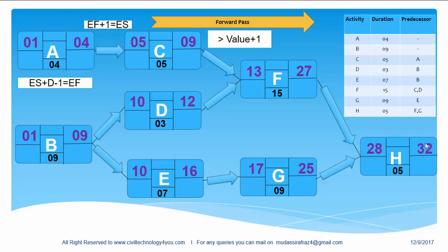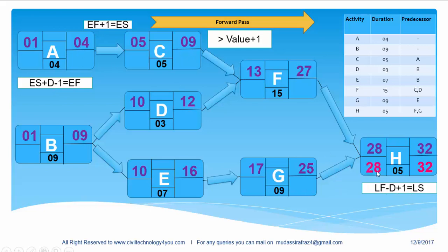For example, our client wants to finish this project at day 32. So what will be the late finish of this activity? Definitely it will be day 32 because we have to finish this project on day 32. And what will be the late start of this activity? We will use this equation: in late finish we will subtract the duration and add one to find out the late start of the activity. As in forward pass, in early start we add duration and subtract one to define the early finish. So here we will do the opposite. So late start will be day 28.